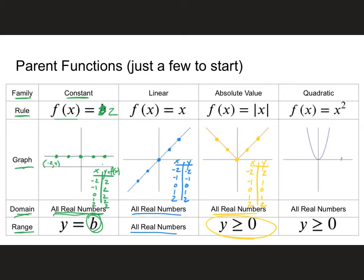Let's go over to the quadratic. We'll create a table of values going from negative two to positive two. Negative two squared: negative two times negative two is four, so point negative two, four. Negative one squared is one. Zero squared is zero. One squared is one. Two squared is four. Domain is all real numbers. Again, none of the values are negative, so range is y greater than or equal to zero.